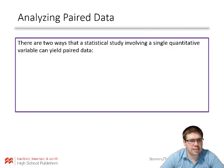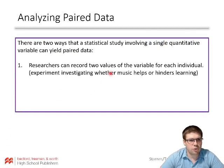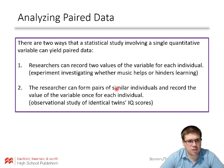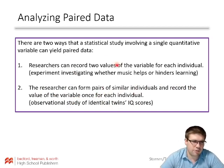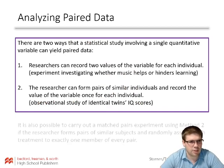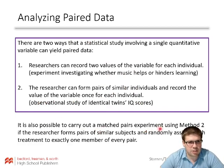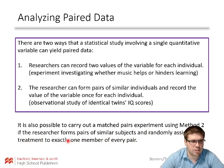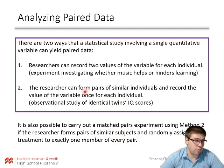There are two ways a statistical study involving a single quantitative variable can yield paired data. First, you can record two values of the variable for each individual — for example, the music experiment. Second, you can form pairs of similar individuals and record the value of the variable once for each individual — for example, the IQ scores of the twins. It is also possible to carry out a matched-pairs experiment by forming pairs of similar subjects and randomly assigning a treatment to exactly one member of every pair, such as with twins.